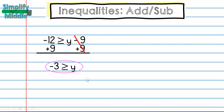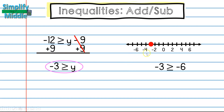Now I'm ready to graph. Because this is a 'greater than or equal to,' I know I have a closed circle at negative 3. I pick a point on either side: negative 6 and 0. I test which statement is true: is negative 3 greater than or equal to negative 6, or is negative 3 greater than or equal to 0? Negative 3 is not greater than 0, so negative 3 is greater than or equal to negative 6 is true. So I shade to the left.